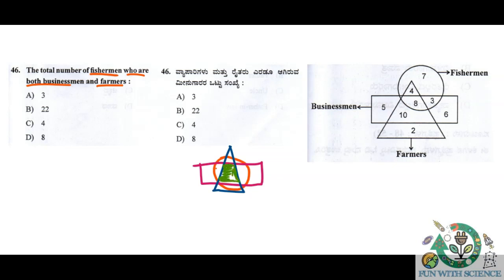Looking at the diagram, we need the triangle, circle, and rectangle intersection. The number 10 is only the rectangle and triangle intersection — it is not a circle intersection because the circle is separate there. So that part is excluded. The answer is 8, which is the three-way intersection. That is option D.